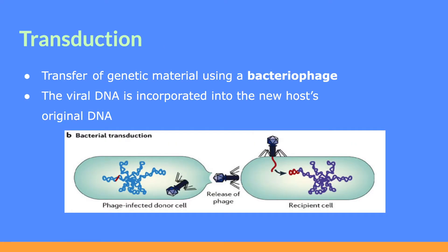Next, we have transduction, which is the transfer of genetic material using a bacteriophage. A bacteriophage is a virus that can parasitize bacteria and inject material into it. If you look at the left side of this picture, you'll see a donor cell that's been phage infected. The bacteriophage has some of the genetic information from the donor cell, and it's going to transfer that genetic material to the recipient cell, where that viral DNA is incorporated into the recipient's DNA.